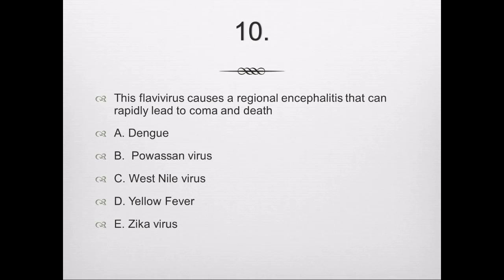Question number 10: This flavivirus causes a regional encephalitis that can rapidly lead to coma and death. Is it A, Dengue; B, Powassan virus; C, West Nile virus; D, Yellow fever; or E, Zika virus?